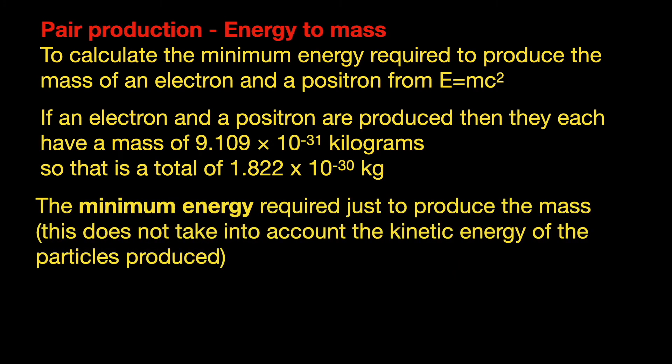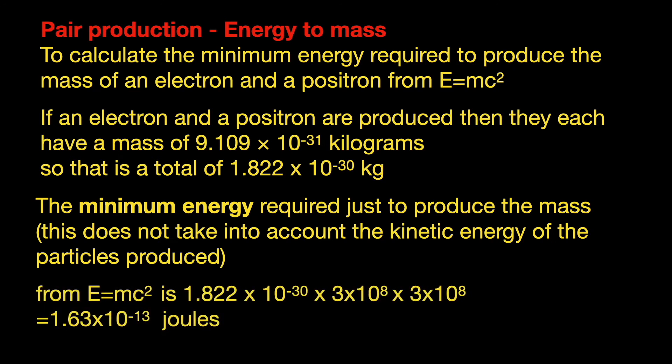Now we're just calculating this mass. We're not taking into account the kinetic energy that the particles will have after production. Using our equation, we have the mass multiplied by the square of the speed of electromagnetic radiation in a vacuum, which comes to 1.63 × 10⁻¹³ joules.